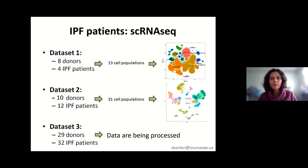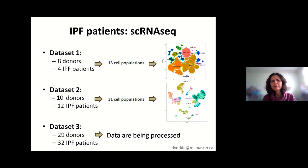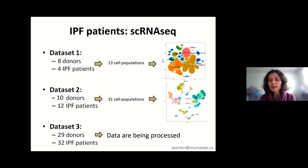Before I present the specific examples, I'll mention the data I've been working with. This is a project involving single cell RNA-seq data obtained from IPF patients, and it's a joint project with Dr. AskCelab. They obtained access to three datasets. The first dataset contains eight donors and four IPF patients. The second one contains 10 donors and 12 patients, and the third one is the largest one, containing 29 donors and 32 IPF patients.